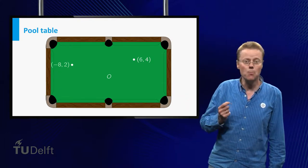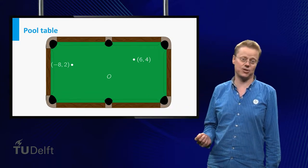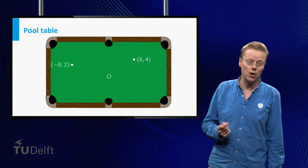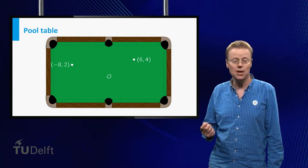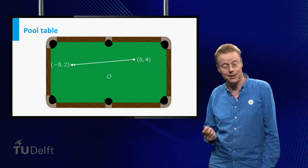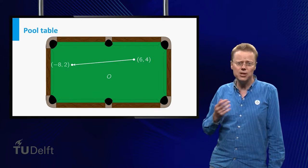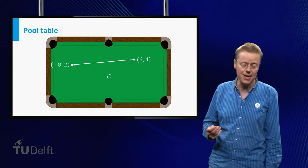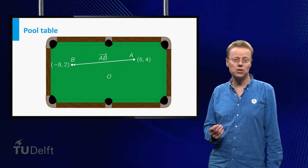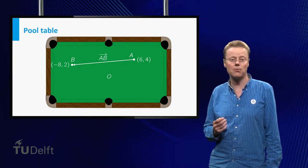If you want to describe a movement on the pool table, this can be done using a vector. The movement from 6,4 to can be represented by an arrow starting at 6,4 and ending at that point. If we denote the point 6,4 by A and minus 8,2 by B, the vector in this picture is denoted as AB with a little arrow on top.